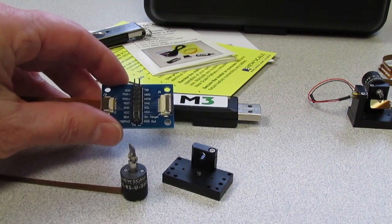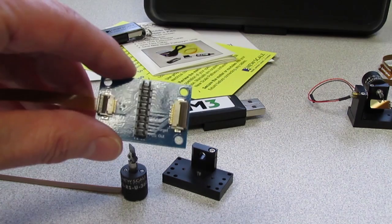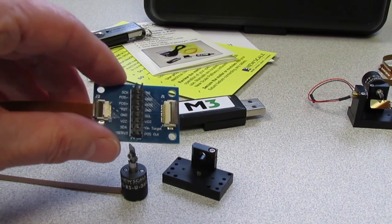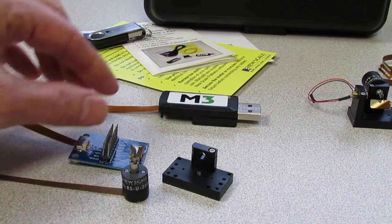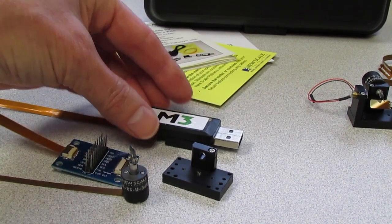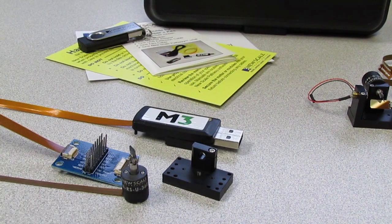One, a breakout board gives you direct access to the digital control interfaces, the analog servo input, the position output, and the DC power in. Two, a USB adapter lets you connect the module to a PC and use NuScale Pathway software for fast and easy evaluation.